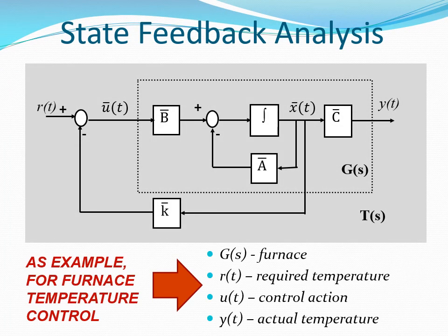To analyze state feedback, let's expand the block for the process into a state space model as shown on the illustration. To make it more practical, let's assume that the system represents a furnace temperature control system. In this case, the process is the furnace, and here it is represented by the block GS, which in a state space model is represented by the matrices A, B, and C connected as shown on the illustration.